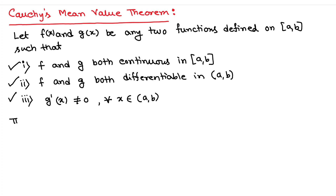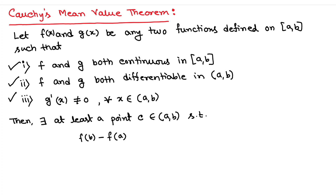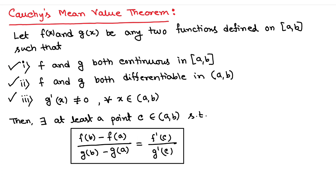Then there exists at least a point c belonging to the open interval (a, b) such that: [f(b) − f(a)] / [g(b) − g(a)] = f'(c) / g'(c). This is the result of Cauchy mean value theorem.